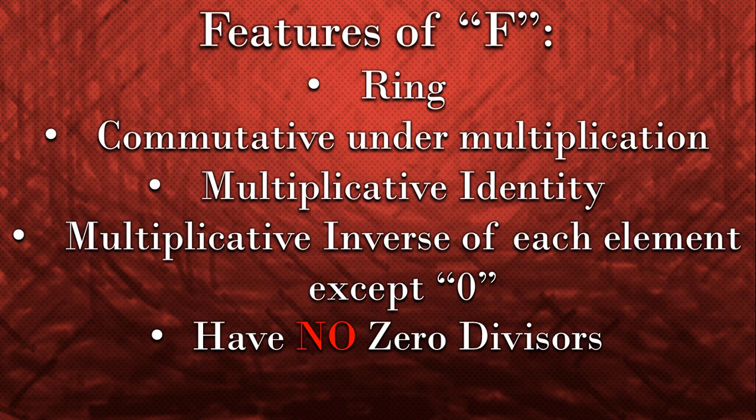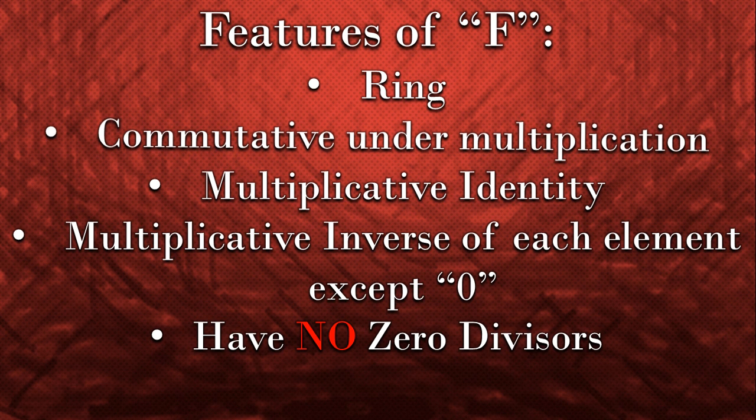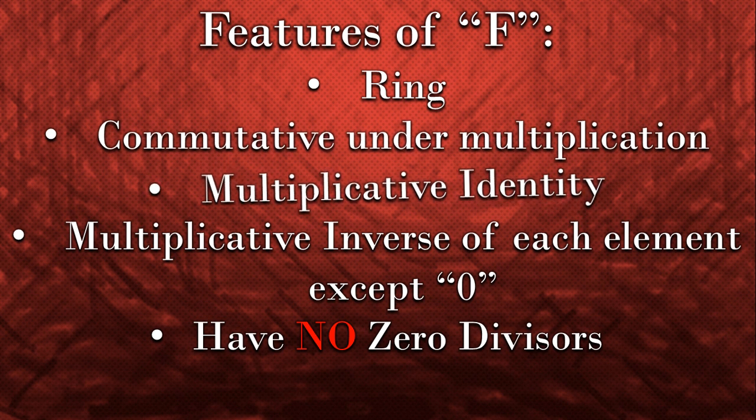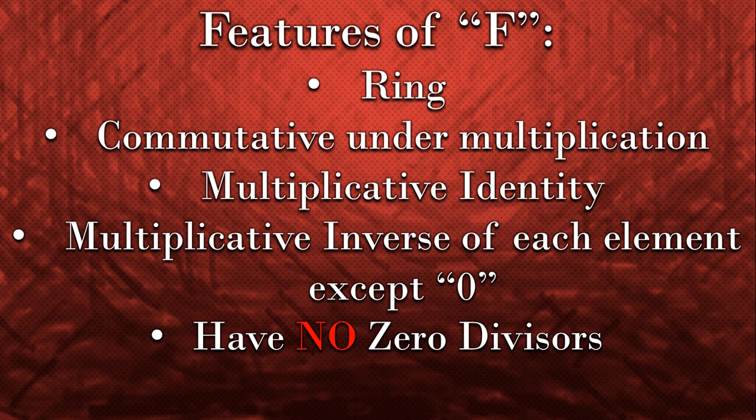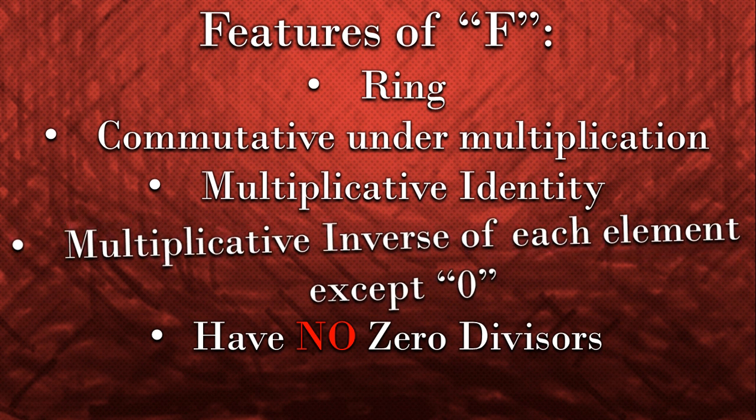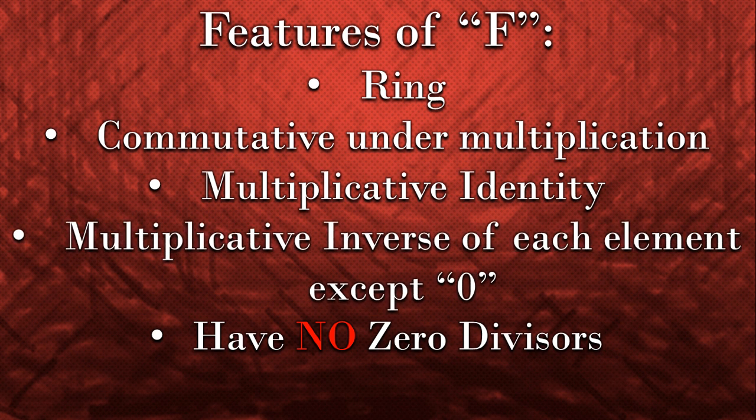So at last, look at the features of F one more time. F is a ring. F is commutative under multiplication. That's right. F has multiplicative identity. Cool. F has multiplicative inverse of all non-zero elements. And now, F has no zero divisors in it.